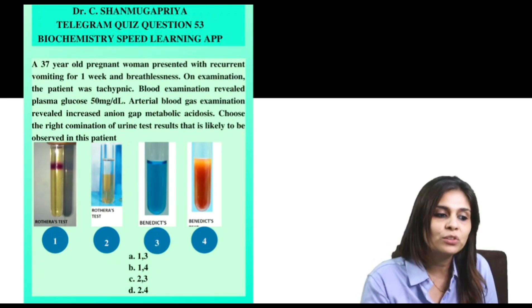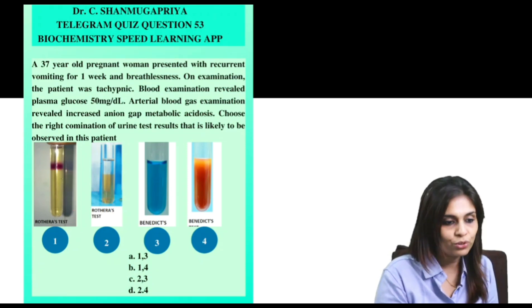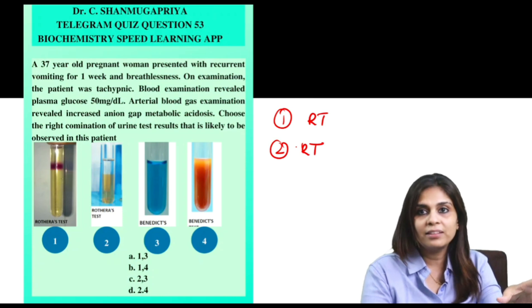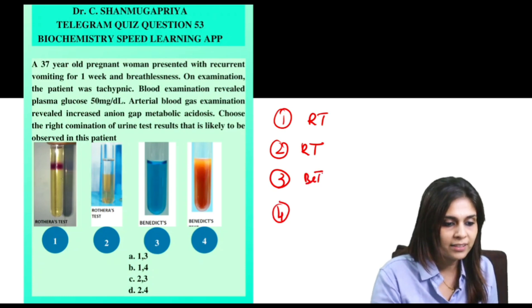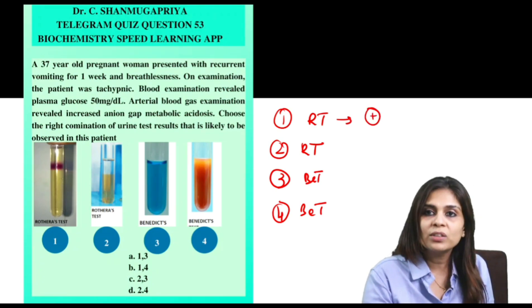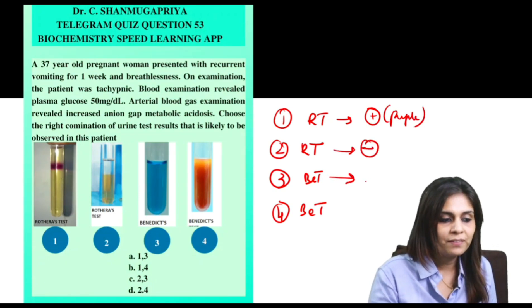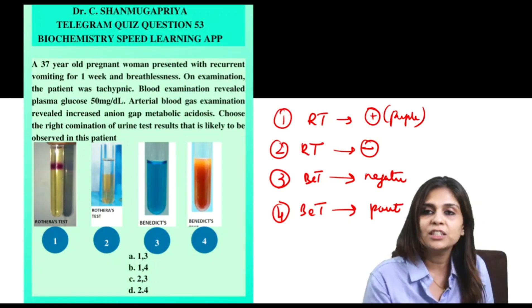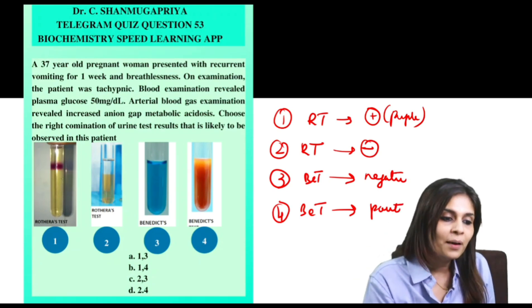Coming back to this question: what would be the right combination of urine tests likely to be observed in this patient? The urine test pictures shown are: picture number one is Rothera's test, picture number two is also Rothera's test, and pictures three and four are Benedict's test. Picture number one is Rothera's test positive, because Rothera's test is positive whenever there is a purple ring. Picture number two is Rothera's test negative. Picture number three is Benedict's test negative, because if Benedict's test is positive there will be a color change from blue to a series of colors.